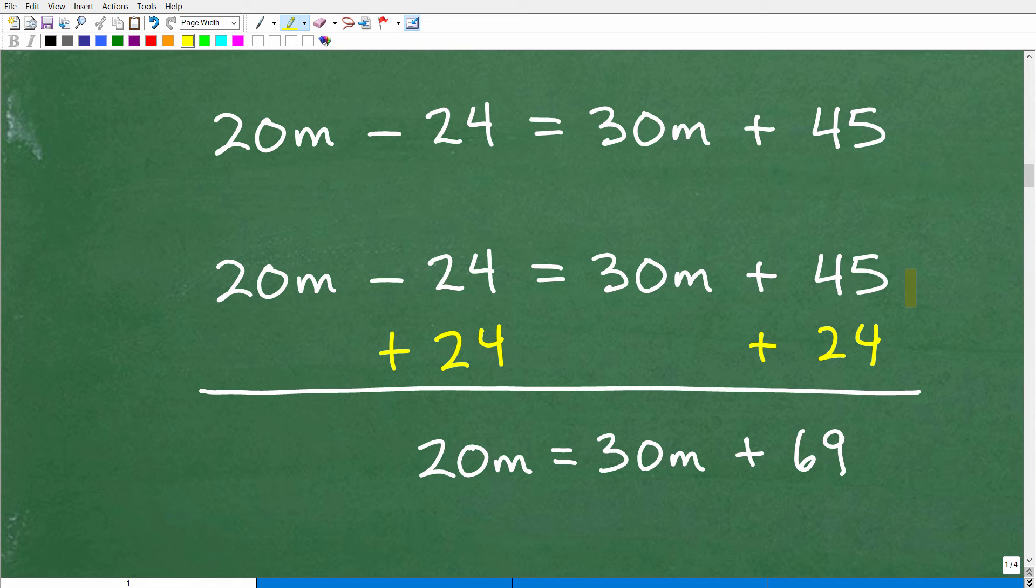So, this negative 24, we want to move on the other side. So, we're going to add 24 to both sides of the equation. Remember, what you do in algebra when you're solving equations, you can do whatever you want as long as you do it equally to both sides of the equation. So, we're going to add down here like in a column manner. So, 20M plus nothing is 20M. Negative 24 plus 24, I already know it's going to be 0. 30M plus nothing is 30M. And then, 45 plus 24 is 69.